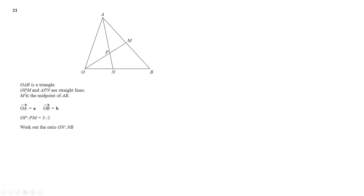In this example we're given a triangle, and told that OPM and APN are straight lines, M is the midpoint of AB, and we're given vectors A to O and O to B. We're given the ratio of O to P to P to M and need to find the ratio O to N to N to B. We can say O to N = k·B, noting that O to N is smaller than O to B, so k should be less than 1.